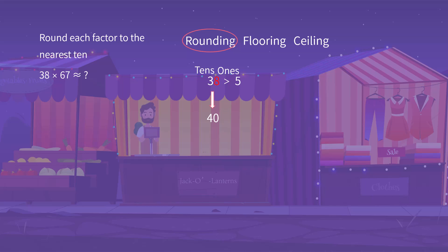For 67, we compare 7 with 5. Since 7 is greater than 5, we add 1 on the tens place and omit the ones place. Thus, we round 67 to 70 as the nearest 10.